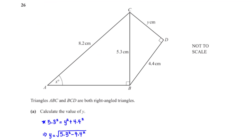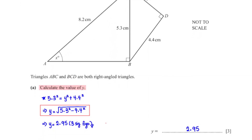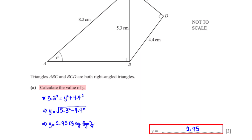Triangles ABC and BCD are both right-angled triangles. Calculate the value of y. To get y, we apply the Pythagoras theorem to triangle BCD. This gives us 5.3 squared equals y squared plus 4.4 squared. When we make y the subject and type this into the calculator, we get 2.95 centimeters rounded to three significant figures.